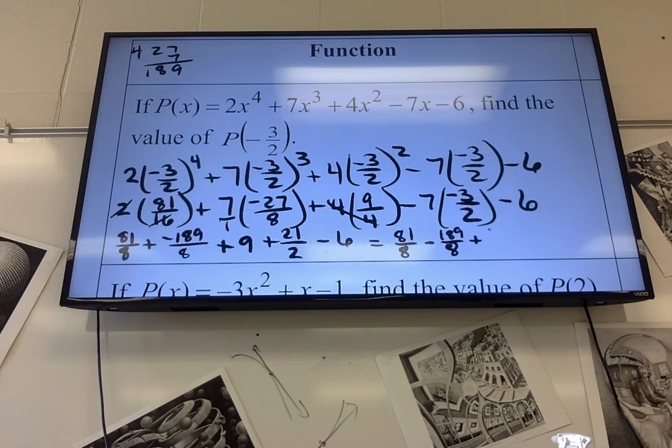Minus 189 over 8. Plus 72 over 8. Because I did 9 times 8 to get to 72. Plus 84 over 8. So, I multiplied by 4. That's 84. Over 8.